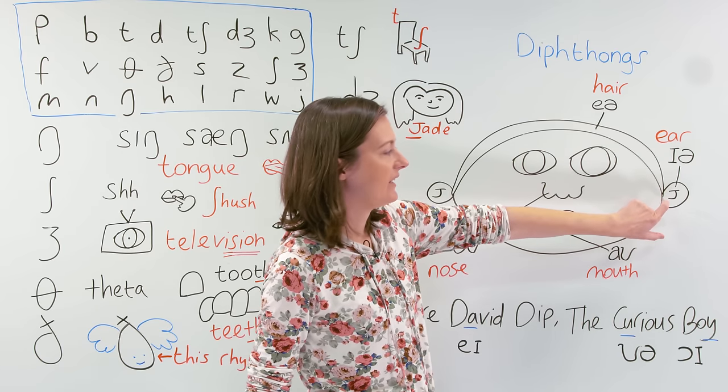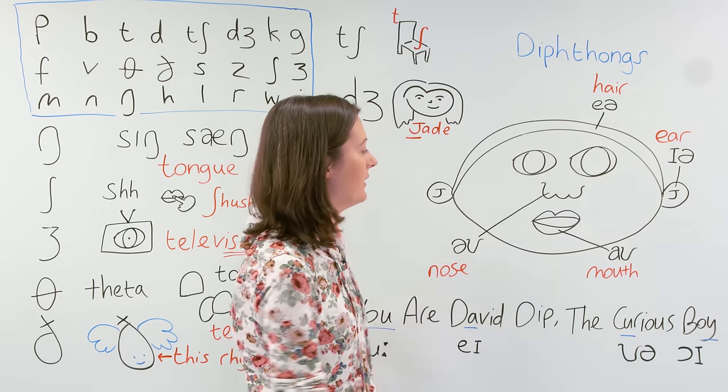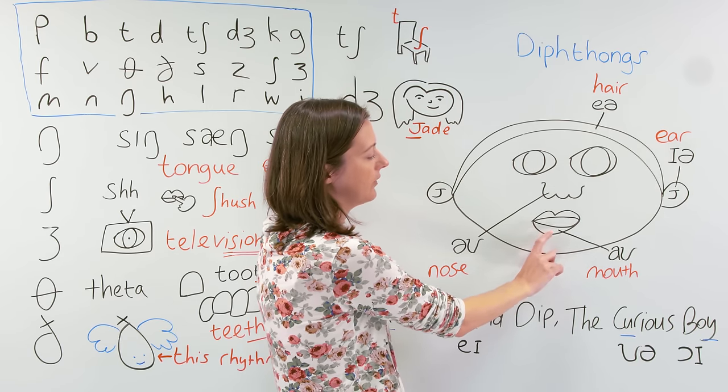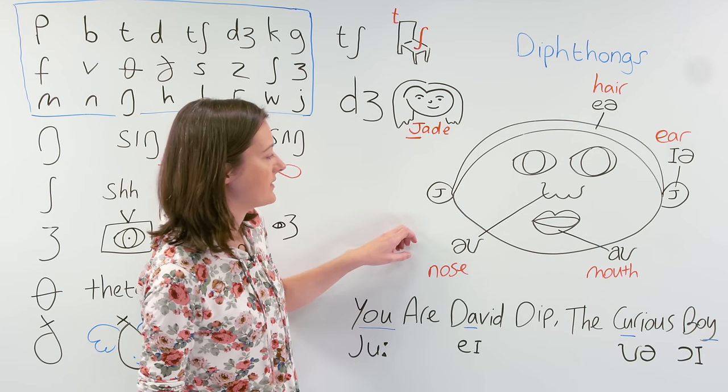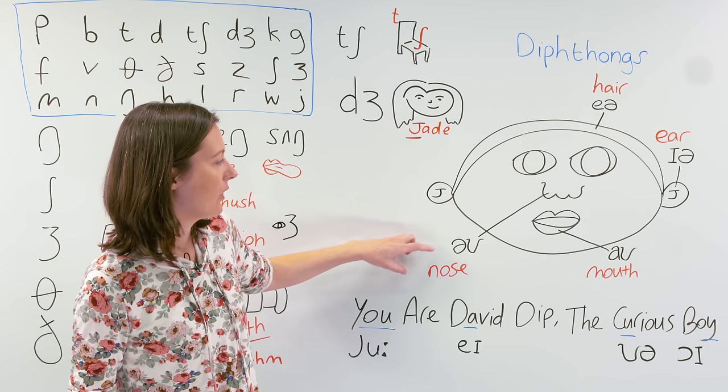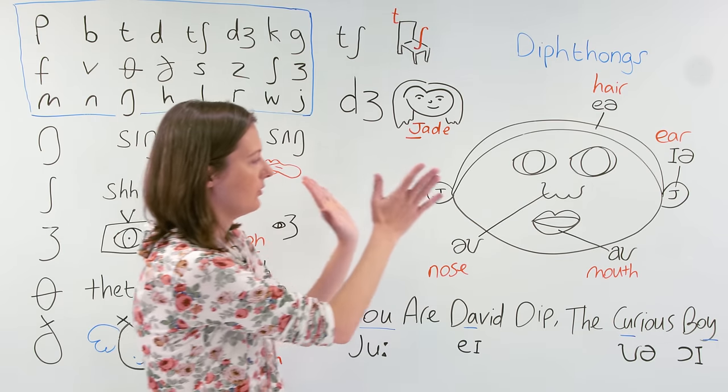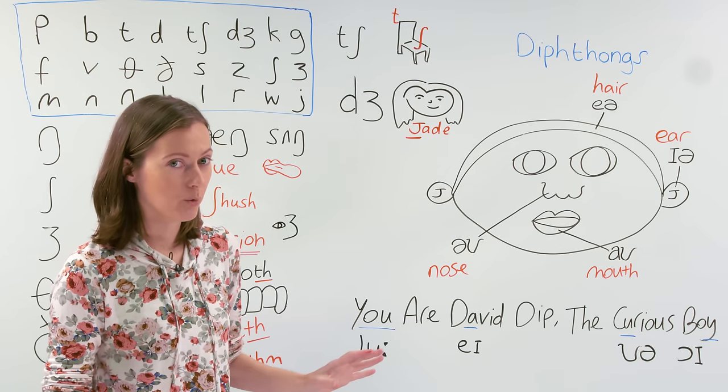Here's David's mouth - ow. So now we've got one, two, three, four diphthongs, but there are more.